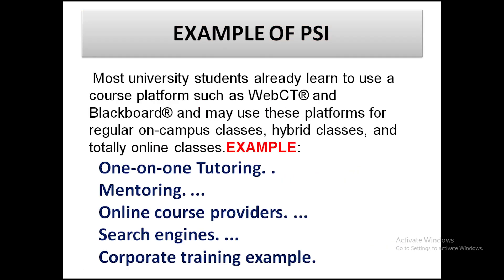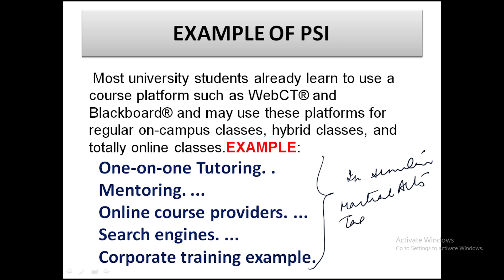Some examples of PSI: most university students already use course platforms like WebCT and Blackboard. Other examples include one-on-one tutoring, mentoring, online courses, search engines, and corporate training. PSI can also be compared to Martial Arts or Taekwondo — where one thing is mastered and then the next thing is given to the student, and some advanced students are employed as proctors to teach others learning at their own pace.